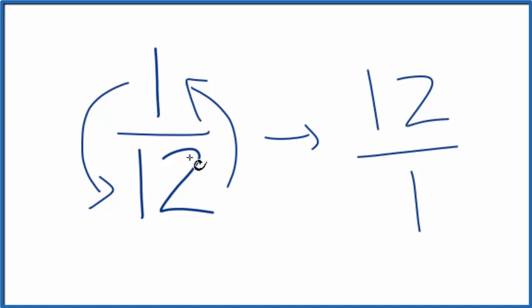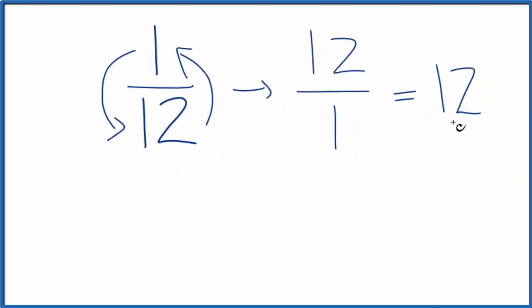So the reciprocal of 1/12 would be 12 over 1. You could also write this as just 12 because 12 over 1, that's 12 divided by 1, that's just 12.